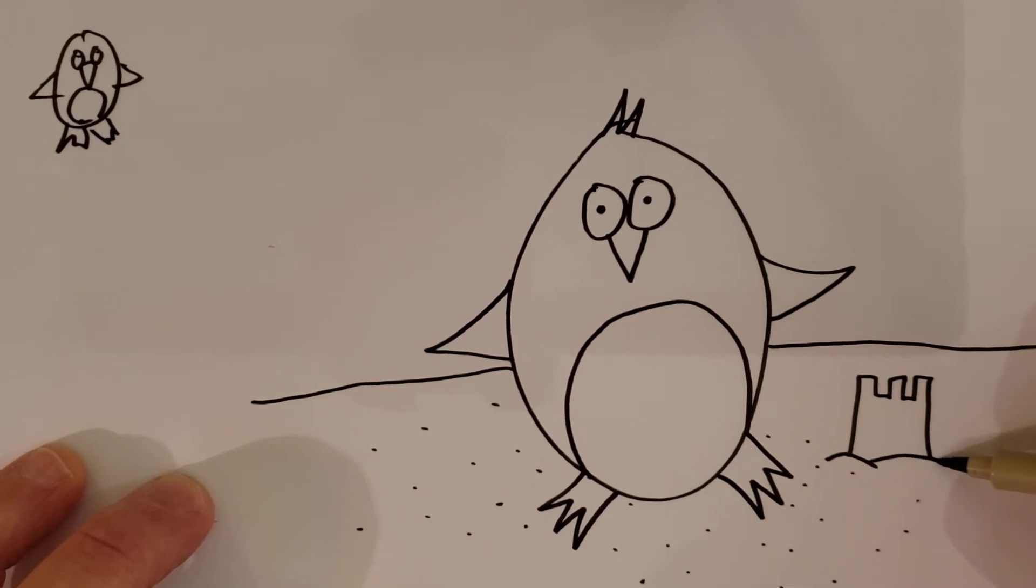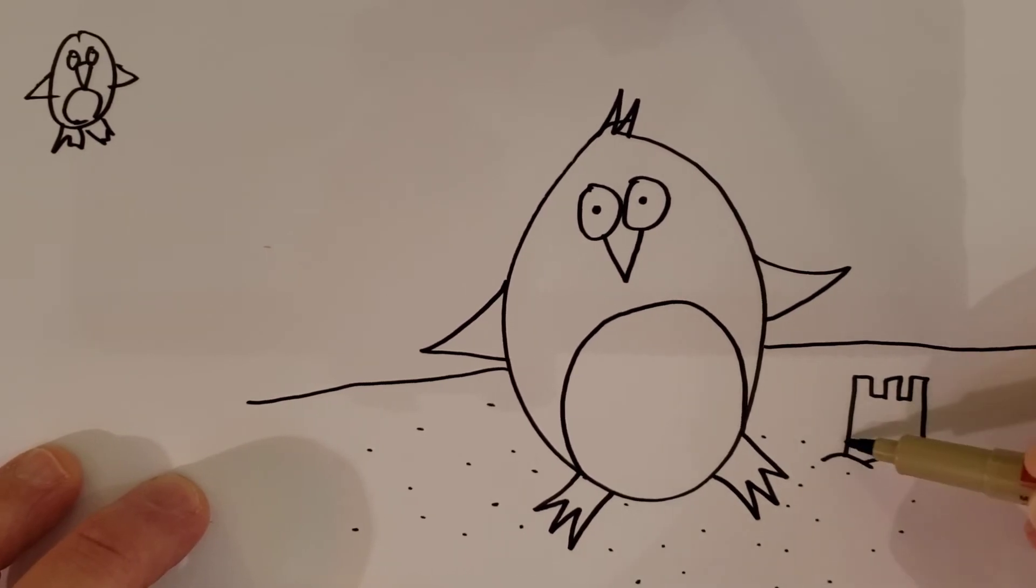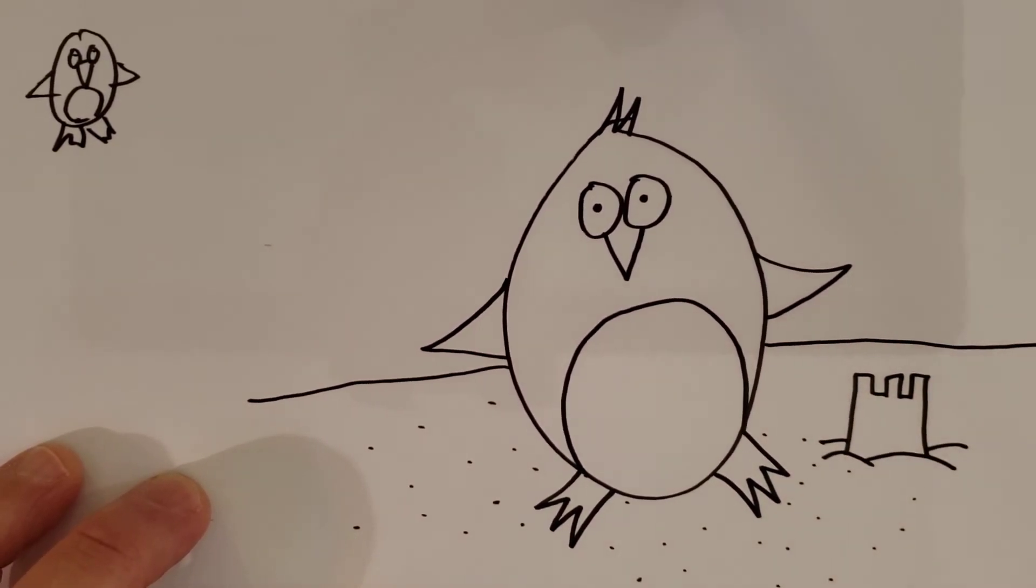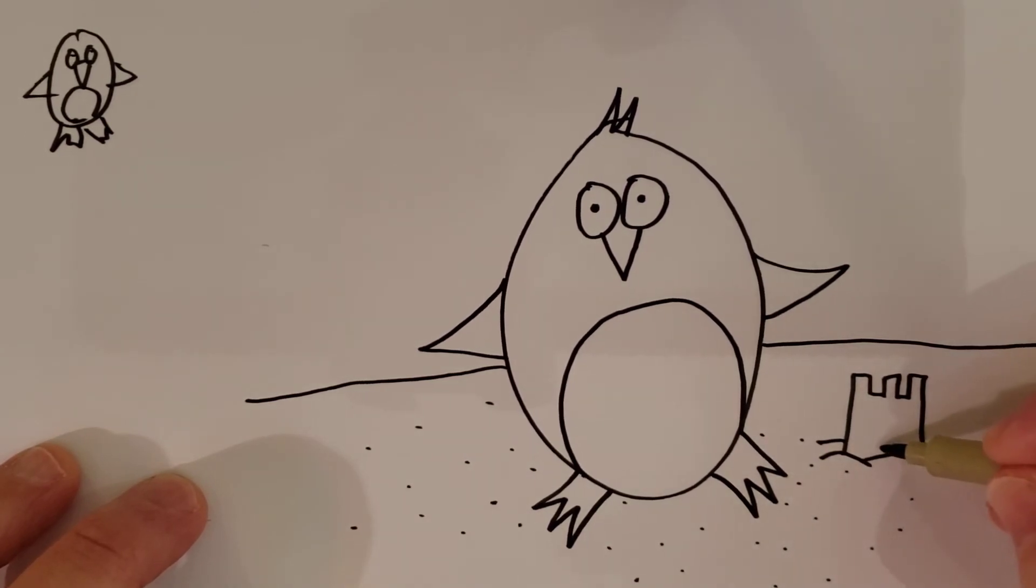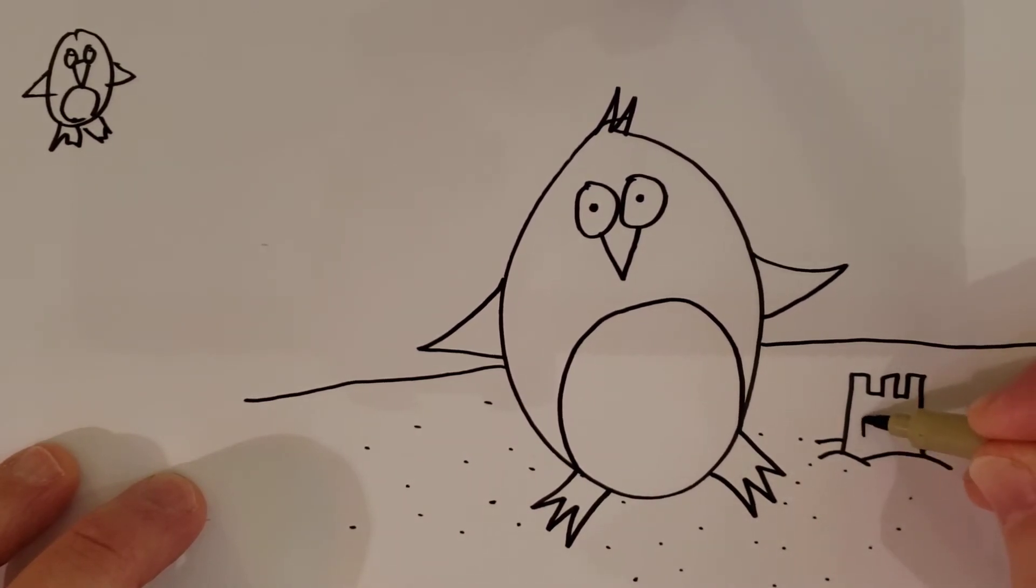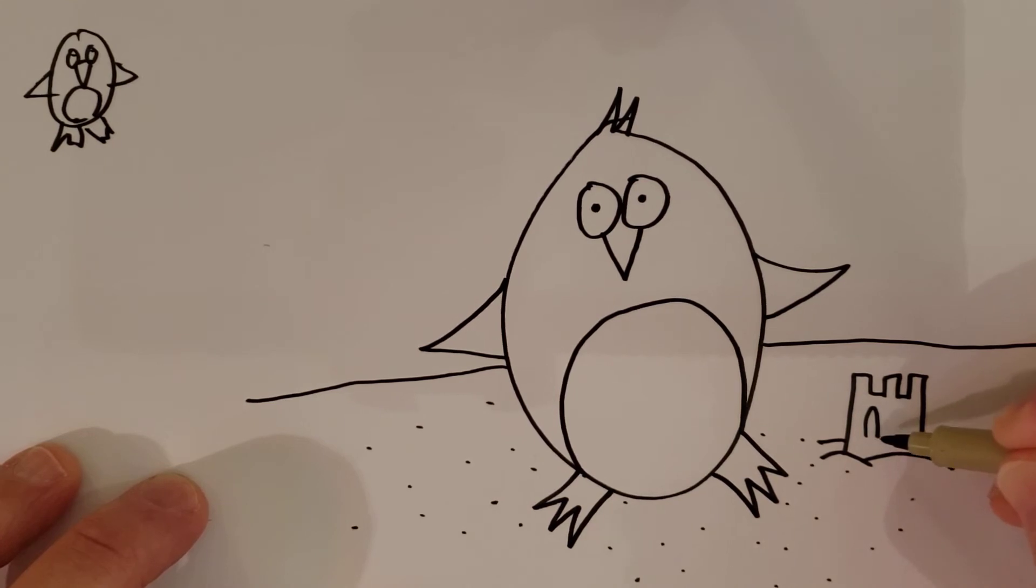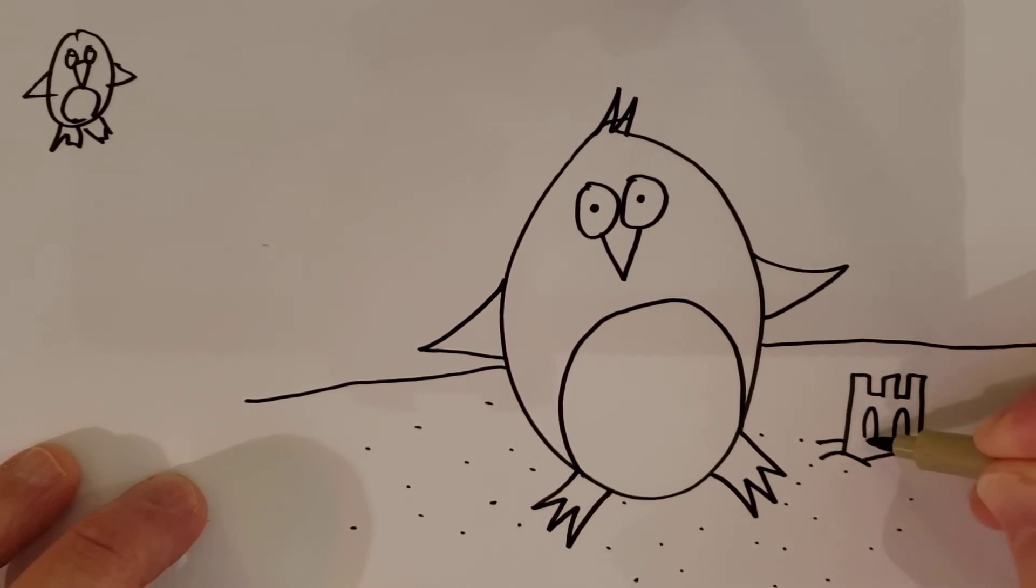There, like that. Got a sandcastle. Our little penguin has built a little sandcastle. So we're gonna draw an upside down U, put a line at the bottom, and that's our little sandcastle that he's built, or she's built.